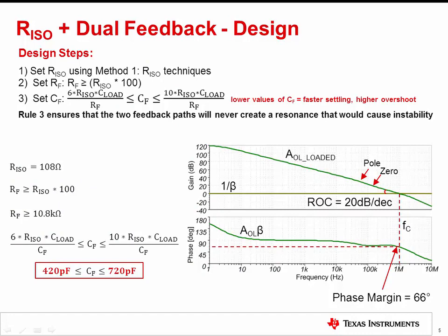The first design step is to select R-ISO. The same method used in the previous video is applied again, and R-ISO is selected to produce a zero in the AOL curve at the frequency where the AOL equals 20 dB.